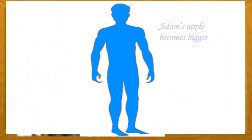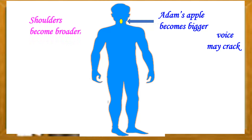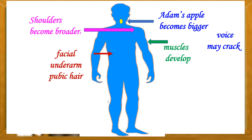For changes in voice, boys experience that the Adam's apple becomes bigger and the voice may crack and becomes deeper. The shoulders become broader and wider. The muscles develop and become bigger and stronger. Facial, underarm, and pubic hair start to appear.